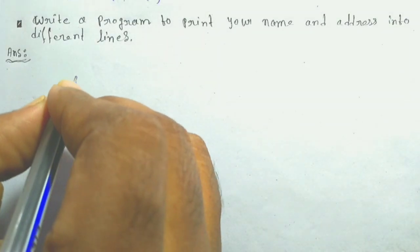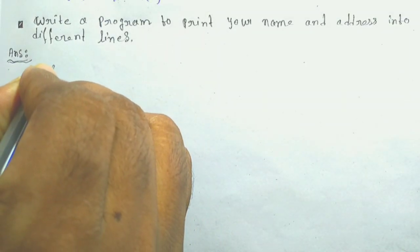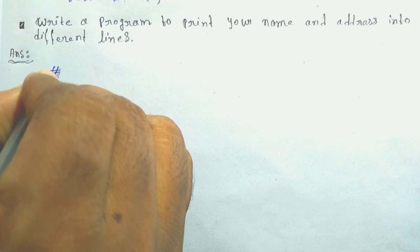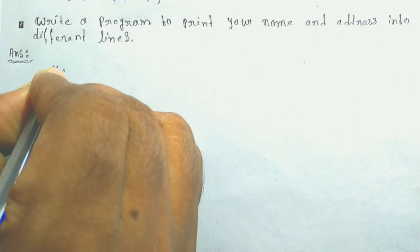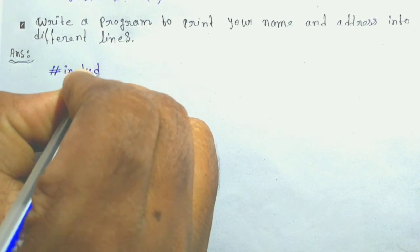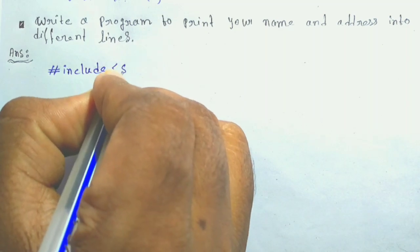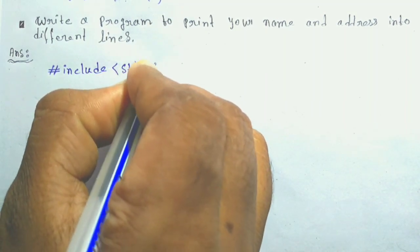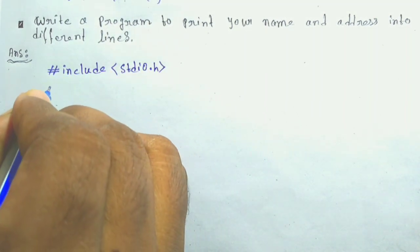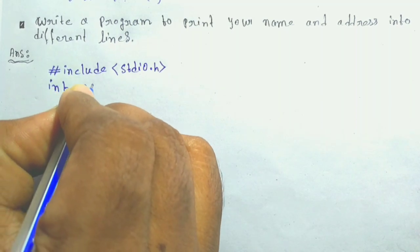Hey everyone, welcome back to your coding channel. In today's video, we're diving into a simple yet essential programming exercise: writing a program to print your name and address on different lines. Whether you're a beginner just starting out or someone looking to brush up on the basics, this tutorial will guide you through the process step-by-step. So grab your favorite coding environment and let's get started.